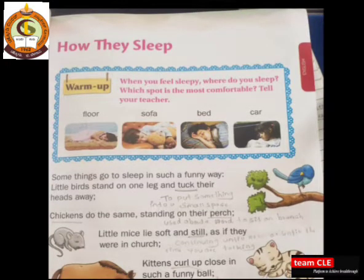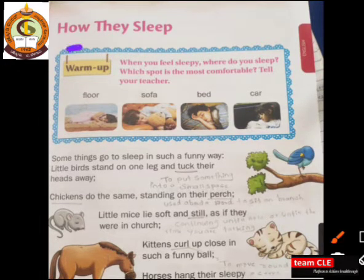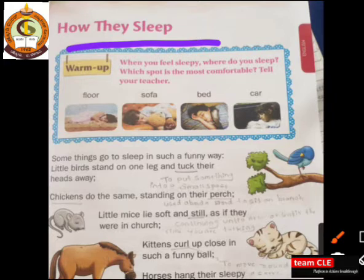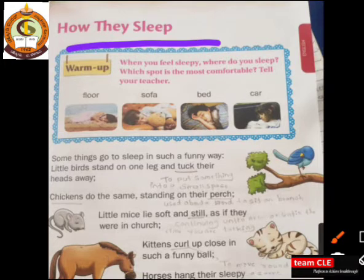So children, in this class we are going to continue this poem. The title of this poem is 'How They Sleep.' As we know, in this poem a poet talks about and describes the different animals and their sleeping habits. We will talk about how the different animals sleep. Before I begin, I want you to follow some instructions. When we read a new poem, we come across many new words — so whenever you come across a new or difficult word, always underline it. Now open your English textbook, page number 11.